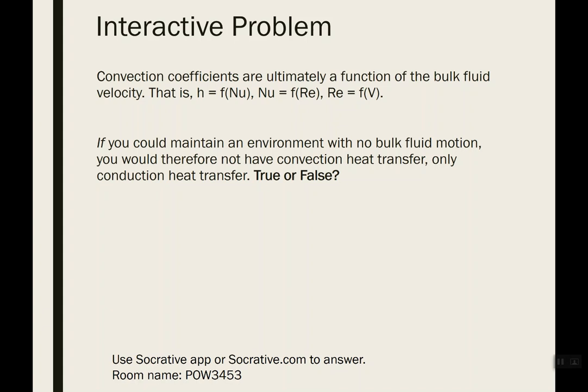So far, you're getting familiar with this procedure of finding a Reynolds number based on the fluid velocity, plugging that Reynolds number and the Prandtl number into a correlation to get the Nusselt number — think of that as a dimensionless heat transfer coefficient. Once you've got the Nusselt number, you back-solve to get your H, your convection coefficient. H is a function of the Nusselt number, Nusselt number is a function of the Reynolds number, and Reynolds number is a function of velocity.